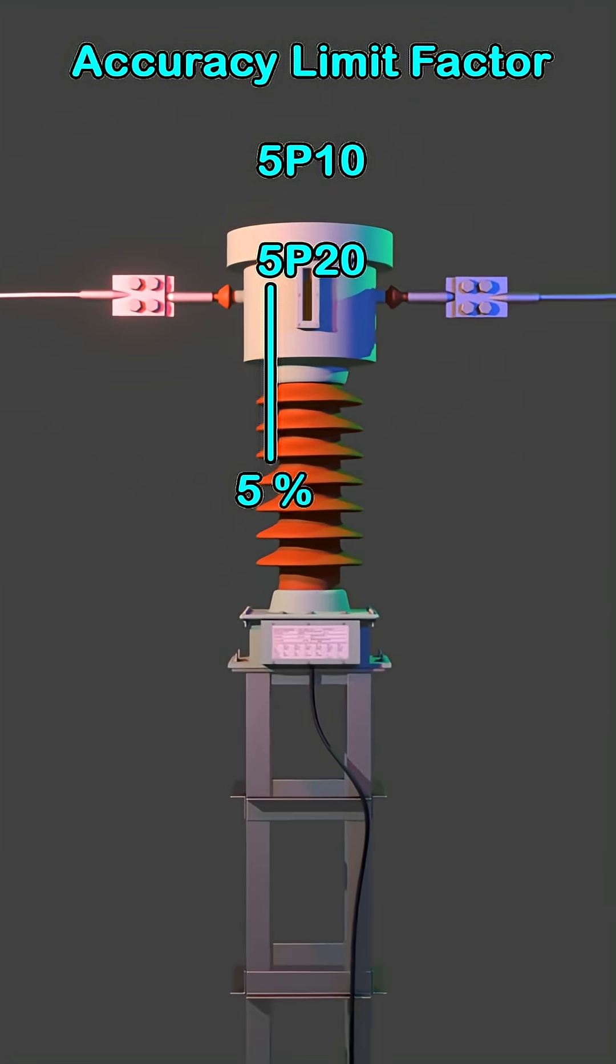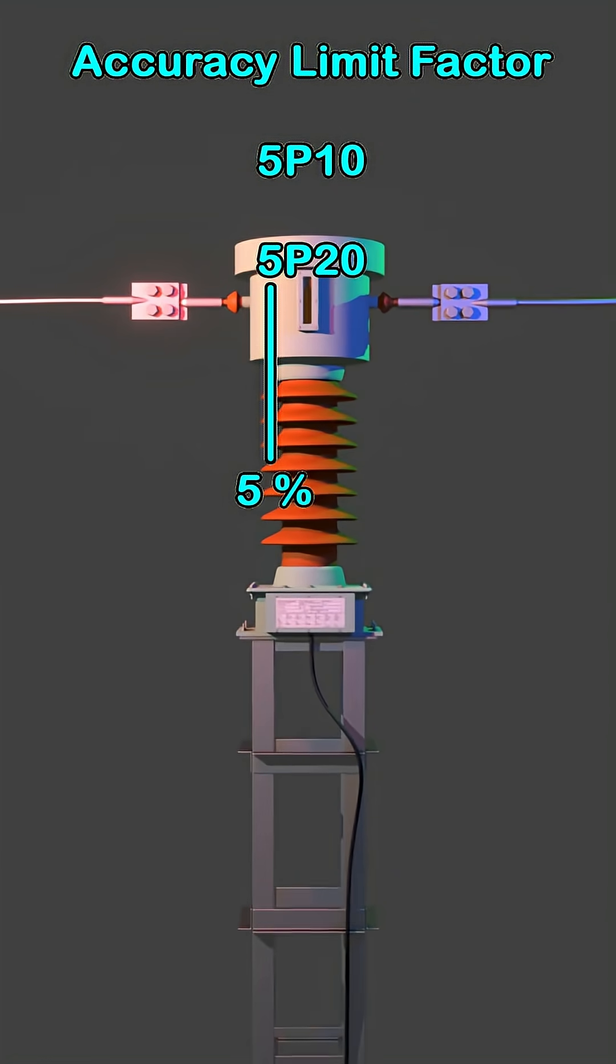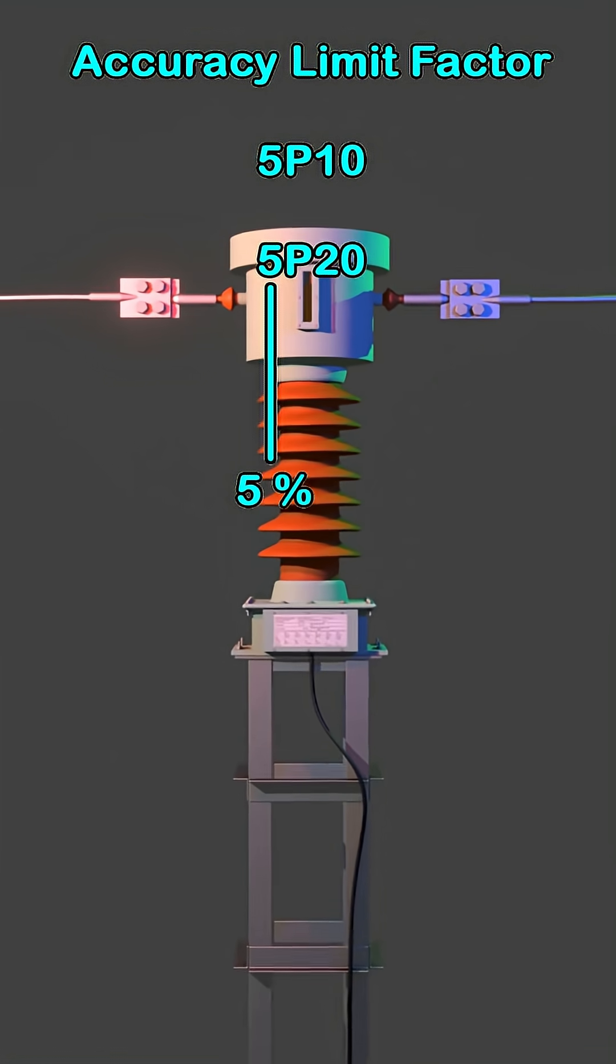The 20 times the rated primary current means the rated primary current multiplied by ALF, which gives the accuracy limit current.